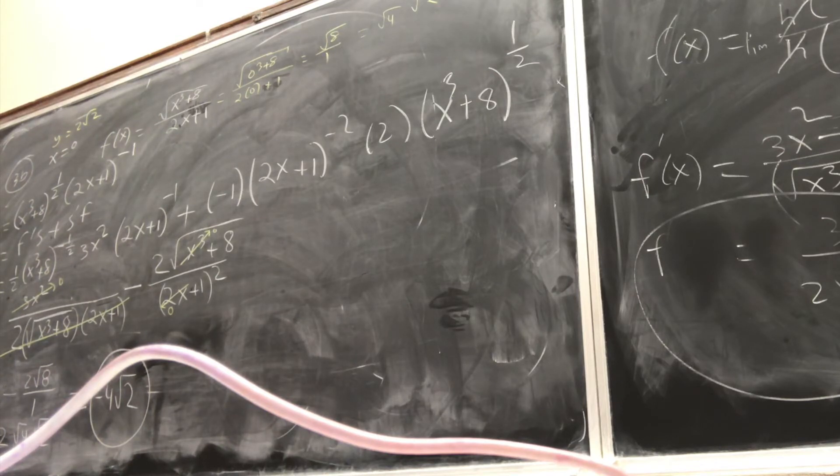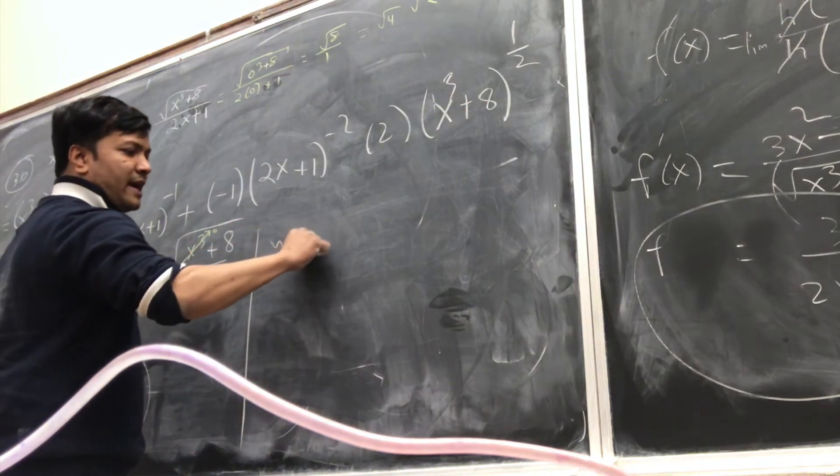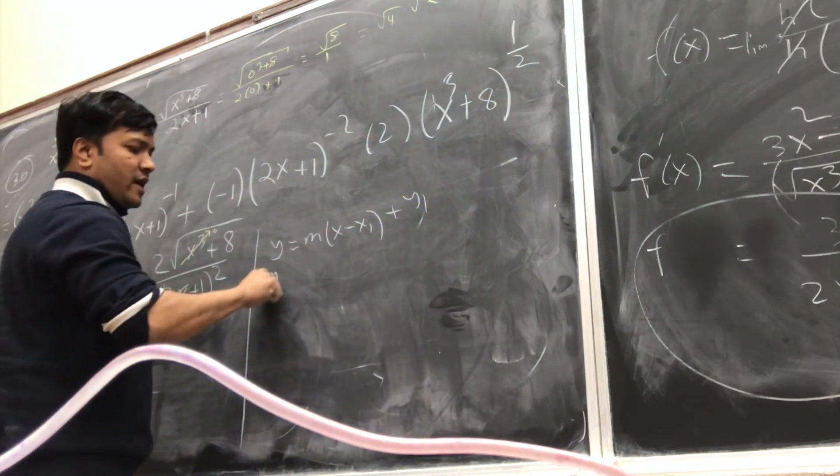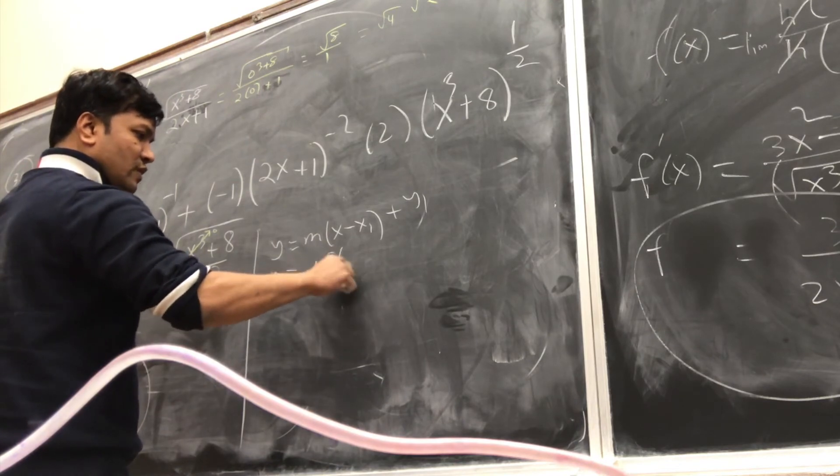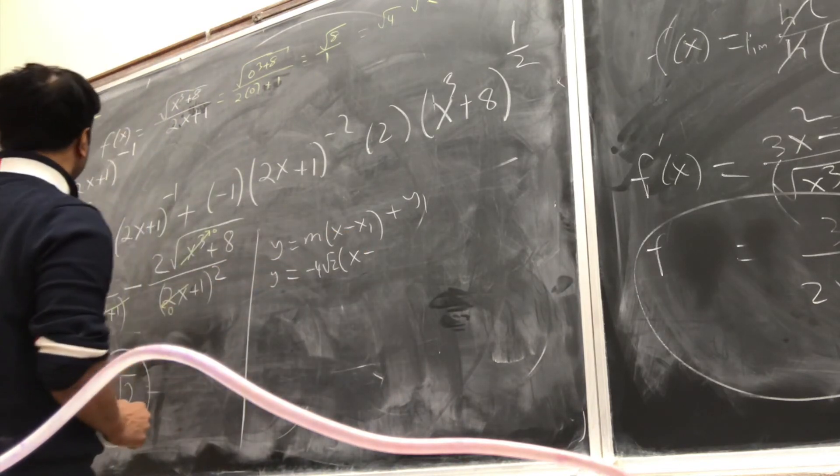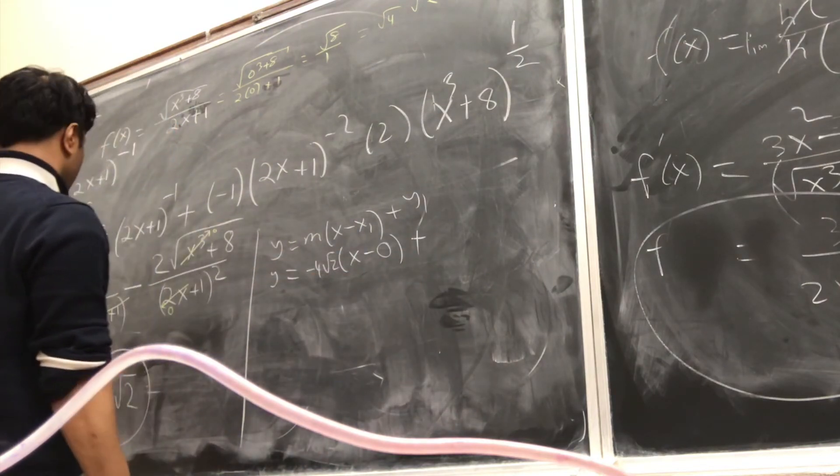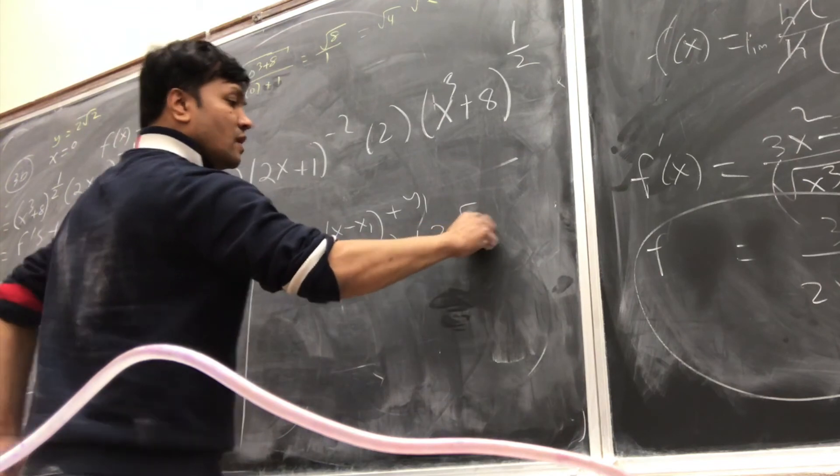So this is the slope of the tangent line. If this is the slope of the tangent line, what is the equation of tangent line? Let's see. y equals mx minus x1 plus y1. So y equals minus 4 root 2, x minus x1 is 0, and y1 is 2 square root of 2.